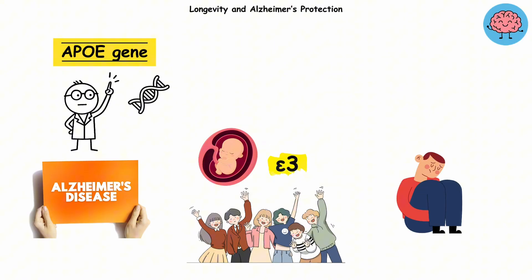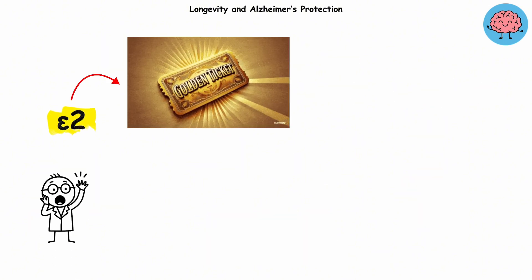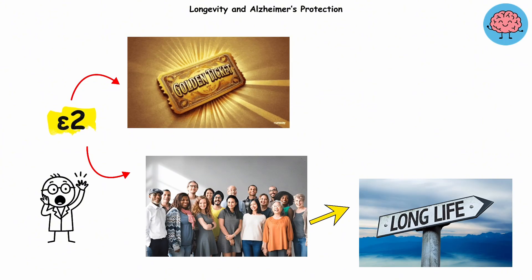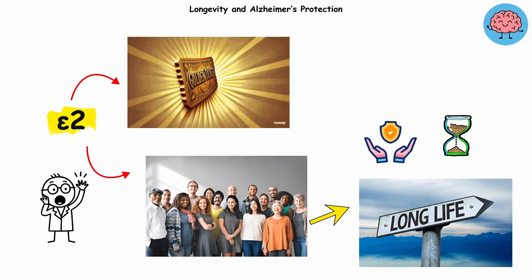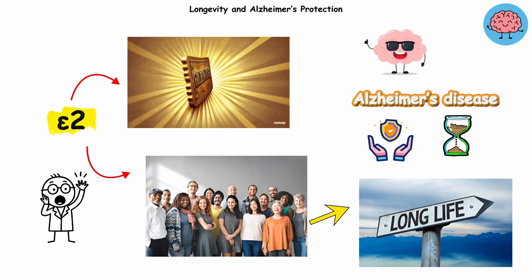Some unlucky people carry epsilon 4, basically a small genetic bug that increases your risk of getting Alzheimer's. But if you have the epsilon 2 variant, that's the golden ticket. People with epsilon 2 tend to live longer, age slower, and have extra protection against Alzheimer's disease, like their brain comes with a built-in antivirus program.